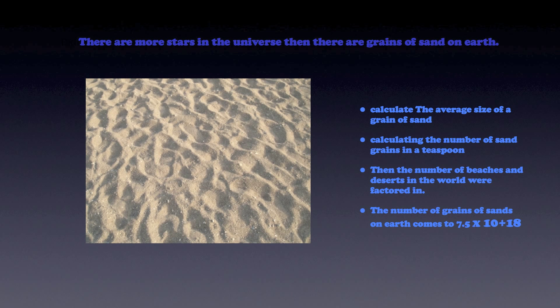Then the number of beaches and deserts in the world were factored in. Multiplied all together, the number is astonishing. The number comes to 7.5 billion billion, or 7.5 × 10 to the power of 18 grains of sand on earth.